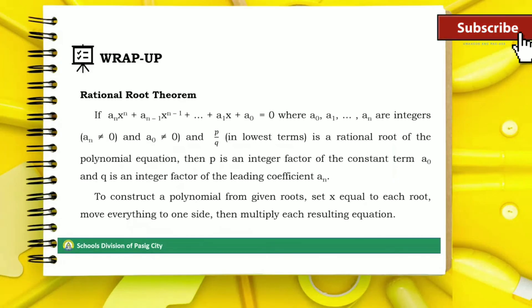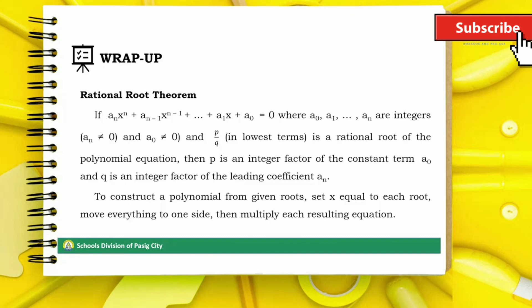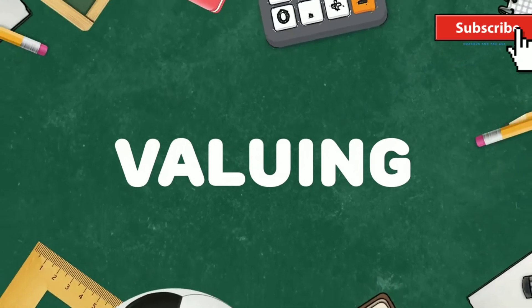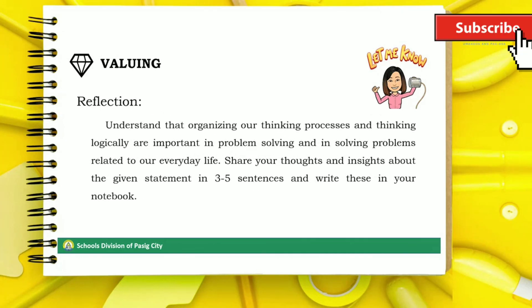To wrap it up, the Rational Root Theorem states that if a polynomial with integer coefficients a₀, a₁, …, aₙ has a rational root p/q in lowest terms, then p is an integer factor of the constant term and q is an integer factor of the leading coefficient. Remember, to construct a polynomial from given roots, simply set x equal to each root and move everything to one side, then multiply each resulting equation. For our reflection, understand that organizing our thinking processes and thinking logically are important in problem solving and in everyday life. Share your thoughts and insights about this statement in 3 to 5 sentences.